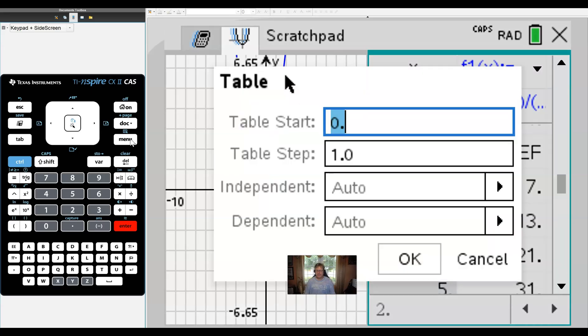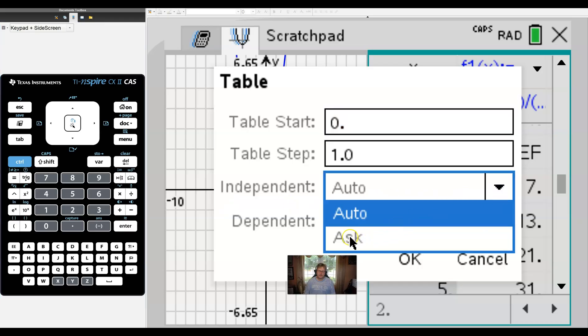Once you do that, all I really need you to do is to change the independent variable. That's the X. The dependent is the f(x).